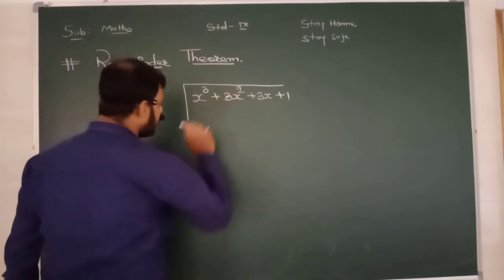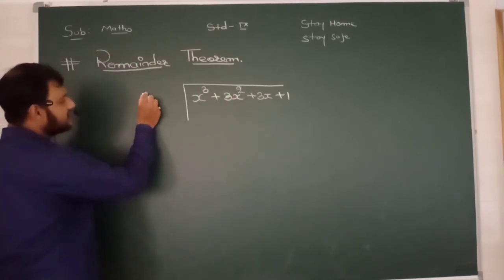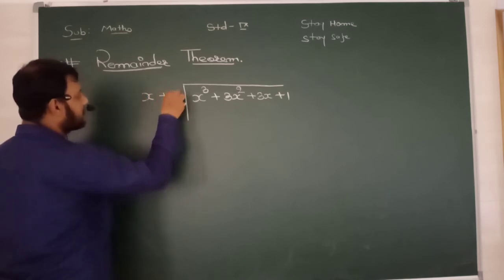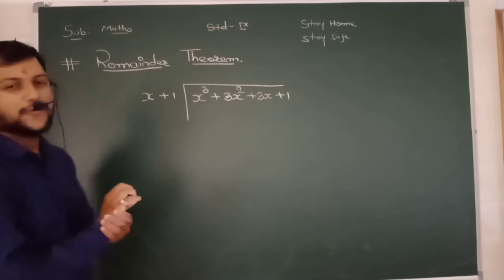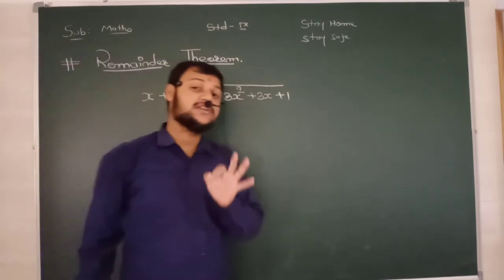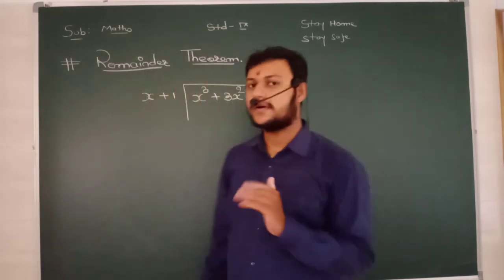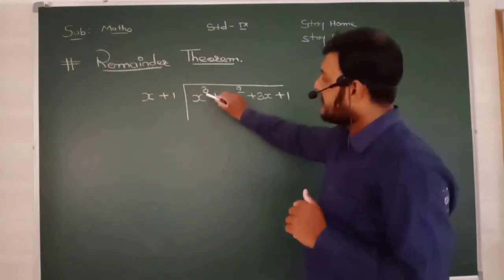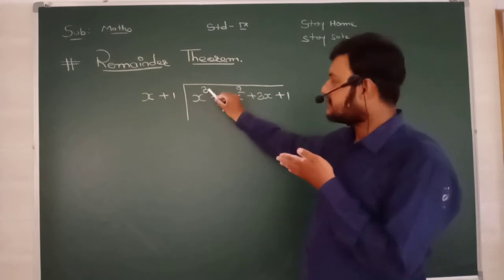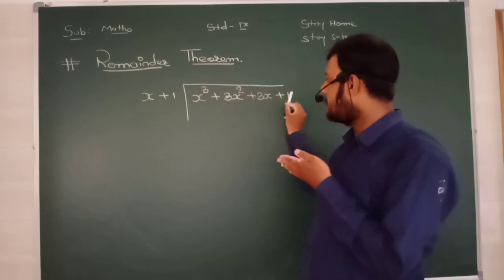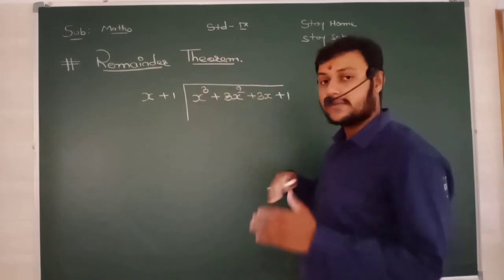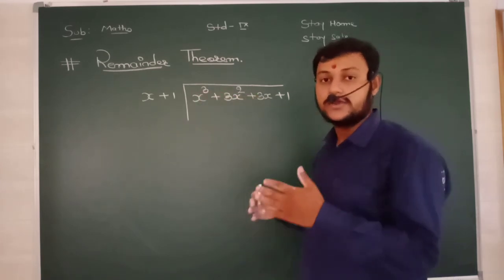Quotient kya tha? Sorry - divisor kya tha? x + 1. CD students, very interesting method and it has certain rules. Rule number one: यहाँ पे सभी power order में होने चाहिए - means 3 hai, उसके बाद 2, फिर 1 और 0, फिर constant आना चाहिए. अगर ऐसा नहीं है तो आपको arrange करना पड़ेगा. Suppose anyone has given this as your p(x) - तो आपको इस तरीके से लिखना है: x³ + 0x² + 0x + 1. This thing should be written in this way as the dividend.